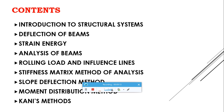There are several methods available to find displacement, deflection, and slope for indeterminate structures. The most important are matrix methods of analysis — flexibility matrix method and stiffness matrix method. Other methods include the slope deflection method, the moment distribution method, and Kani's method, which is useful for analysis of continuous beams and rigid jointed plane frames. Using these methods, one can analyze beams as well as rigid frames.